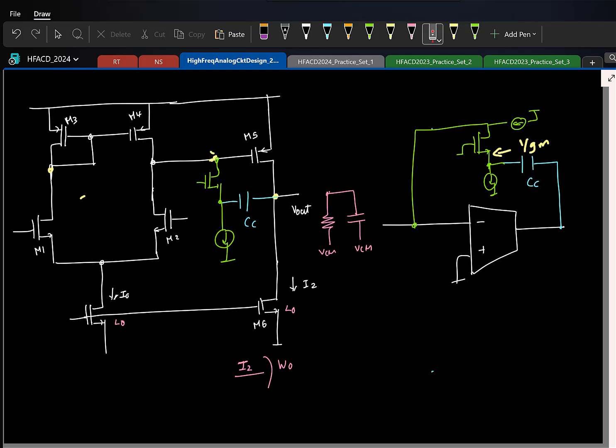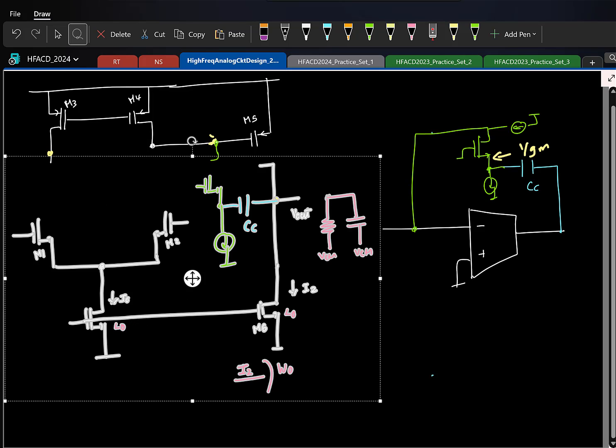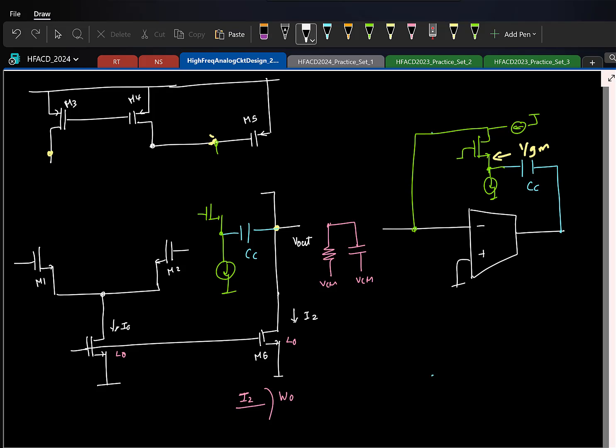But this is not that efficient because you are having an additional branch consuming current. So, that is when people thought. Do you know some OTA topology that also uses a current buffer? The cascode uses a current buffer. So, the idea is why don't I use a cascode and reuse that current buffer. So, that gave rise to this topology. I will just show it and finish it. We have let us say cascode like this. So, now what we are planning to do is use this guy as the current buffer now.